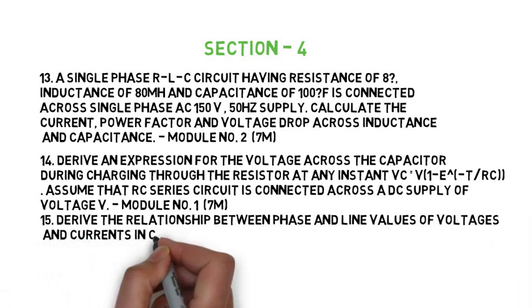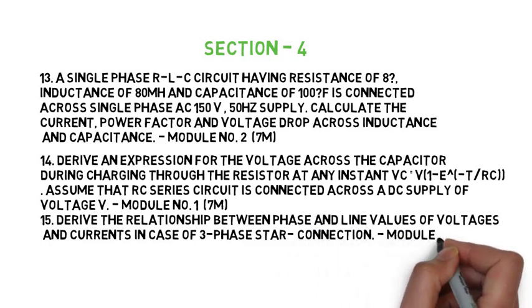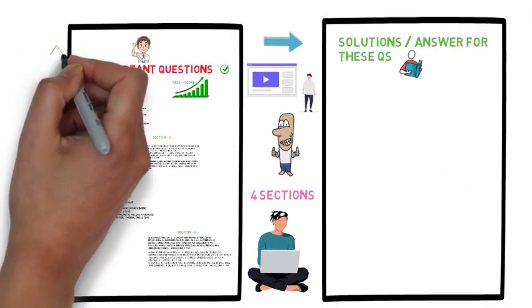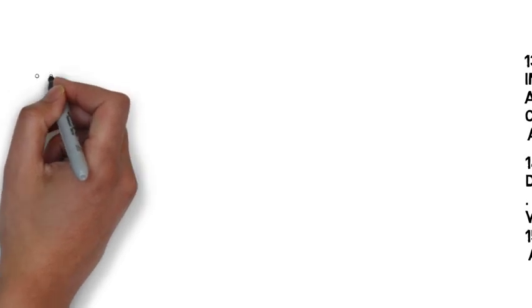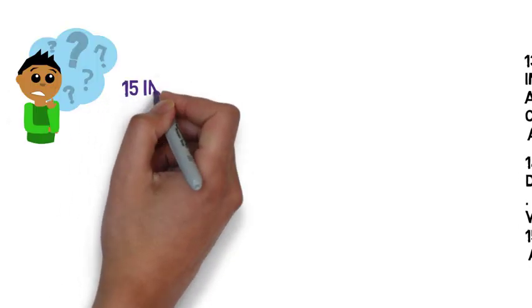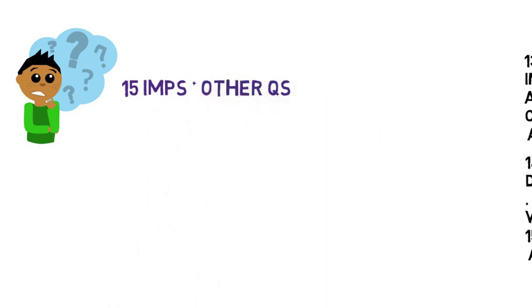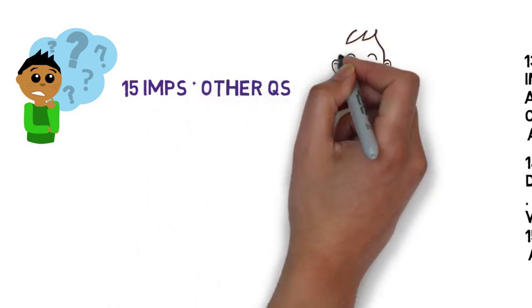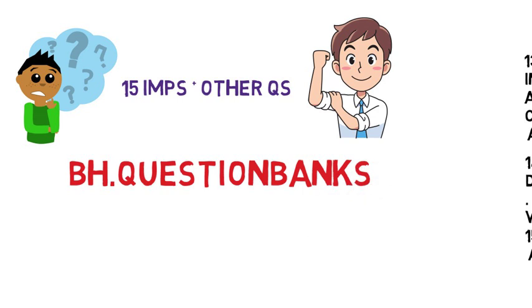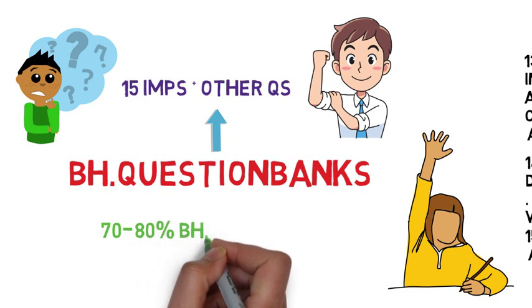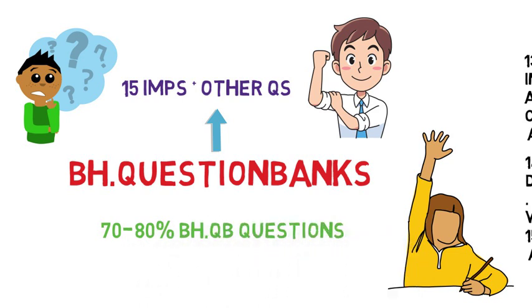So, these are the 15 important questions that can help you clear the subject and score marks. You can also see the Brain Eaters question bank — there is a link in the description if you want to check the paper pattern.